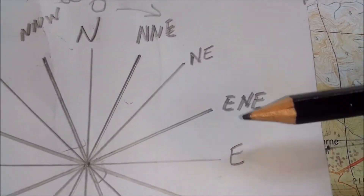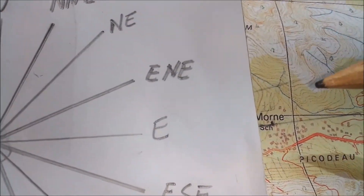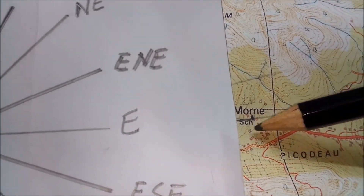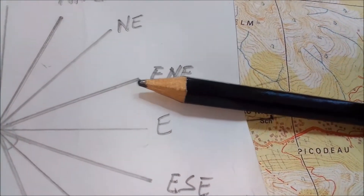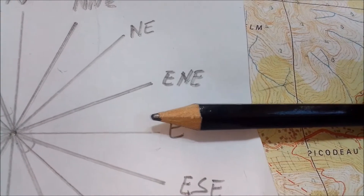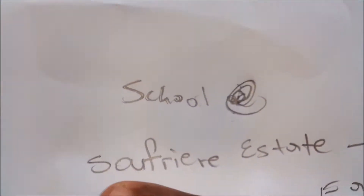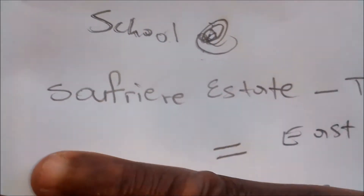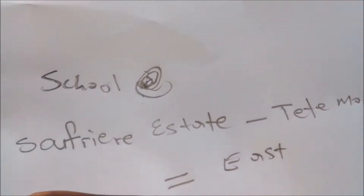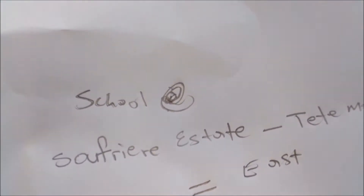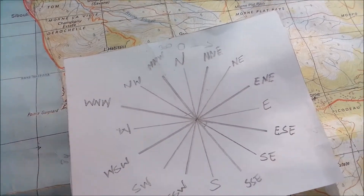Now if you look at this, you notice that you have two directions — you have north-east and east. Looking at the line, Tetamon school is more in line with the east. So if I place my pen there, it is more towards the east. So from Sufferer Estate to Tetamon School equals an eastern direction.